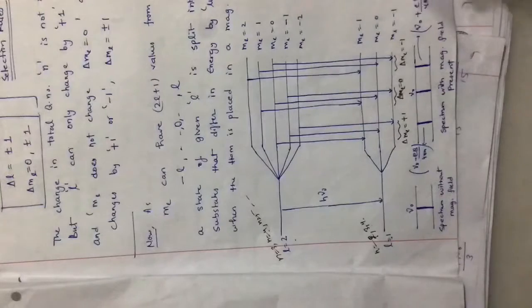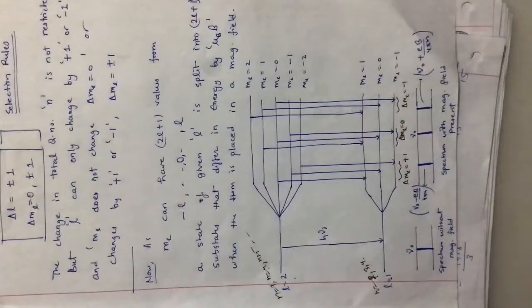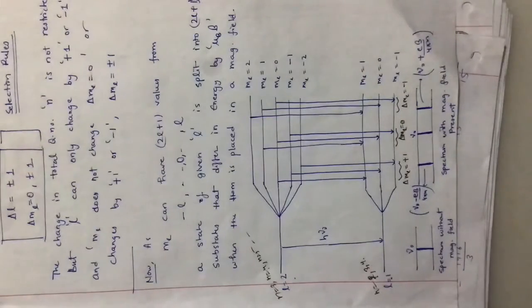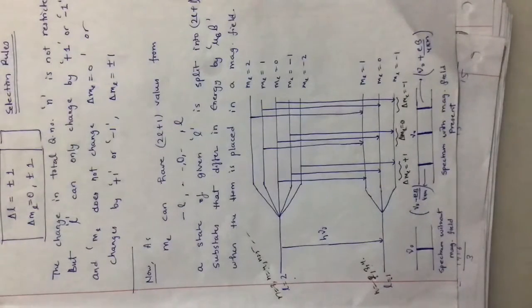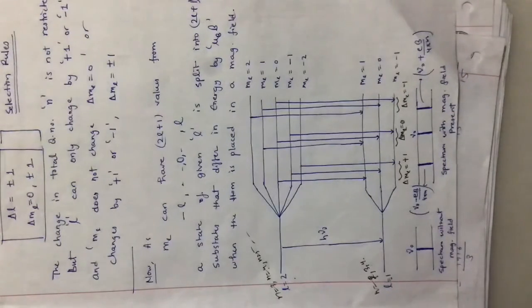Now, an important exam question is: what is the difference between normal Zeeman effect and anomalous Zeeman effect? In normal Zeeman effect we only consider the orbital angular momentum and do not consider the spin factor. So for normal Zeeman effect, spin must be zero. If s is equal to zero, then we will have normal Zeeman effect and we have a singlet state when the spin quantum number comes out to be zero.